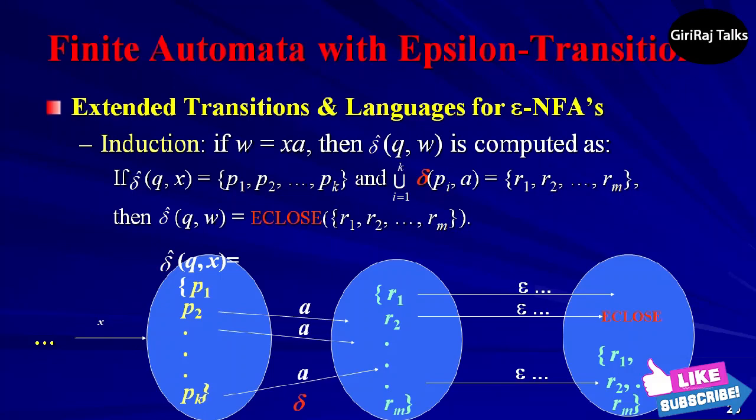That is, δ̂(q, w) = ECLOSE({r1, r2, ..., rm}). This additional closure step includes all the paths from q labeled w by considering the possibility that there are additional epsilon-labeled arcs that we can follow after making a transition on the final real symbol a.